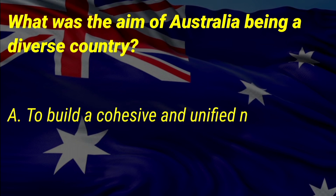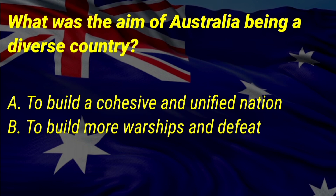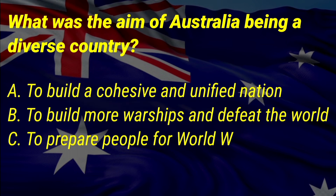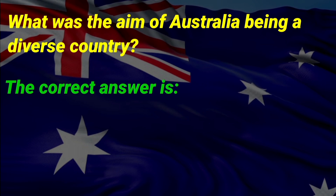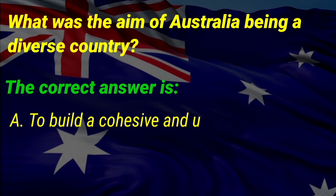What was the aim of Australia being a diverse country? A: to build a cohesive and unified nation, B: to build more warships and defeat the world, C: to prepare people for World War Three. The correct answer is A, to build a cohesive and unified nation.